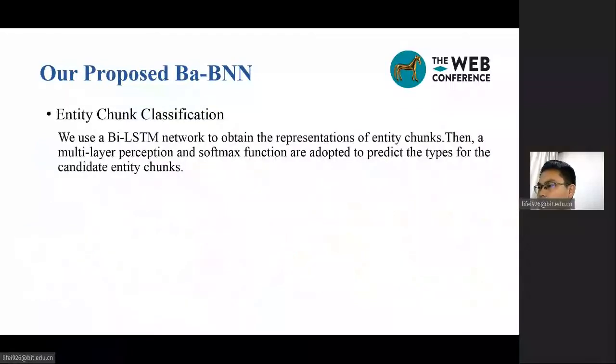We use a bidirectional LSTM network to obtain the representations of entity trunks. Then, a multilayer perceptron and softmax functions are adopted to predict the types for the candidate entity trunks. We apply a multitask loss for training the Ba-BNN model.